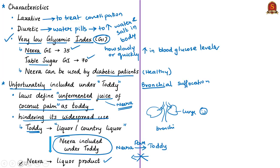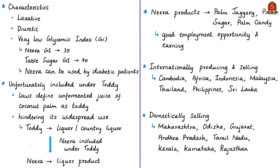Neera can be used as a basic raw material for producing palm jaggery, gur, palm sugar or palm candy — some in semi-solid form, some in solid form. The toddy tappers or Neera tappers are involved in this production trade, which provides good employment opportunities and earnings to the tapper communities. However, these tappers are among the poorest of the poor.